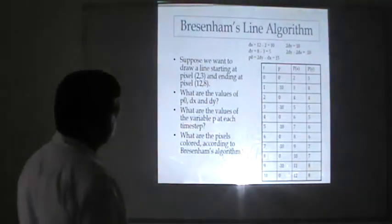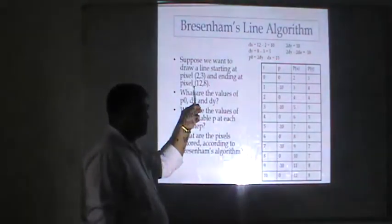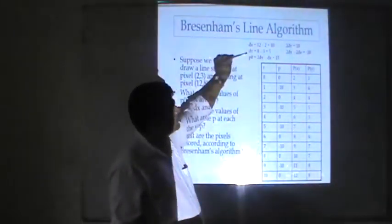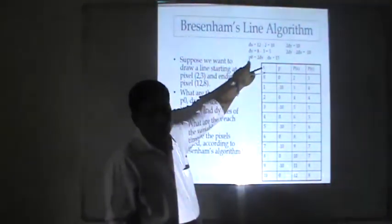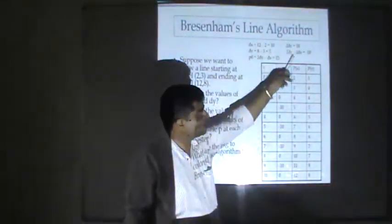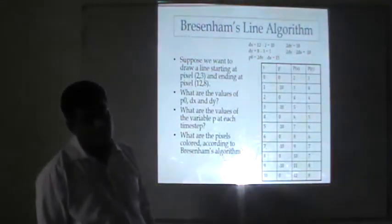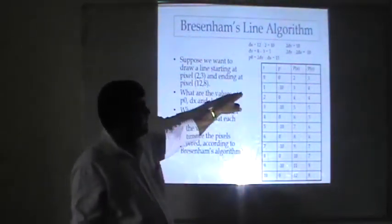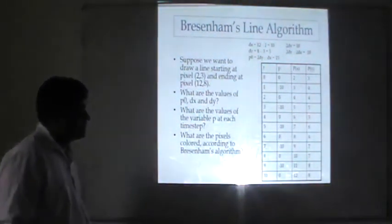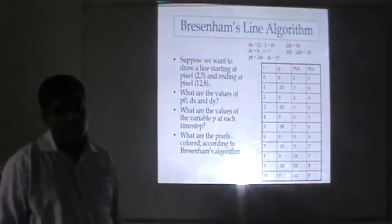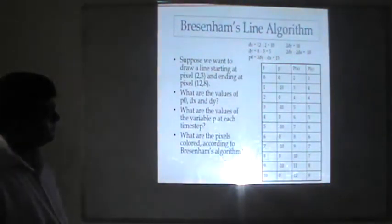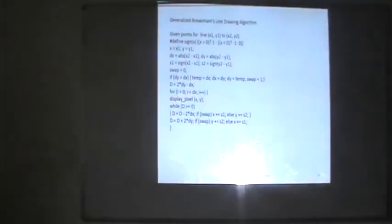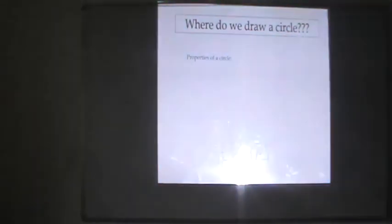A second example using points (2, 3) and (12, 8): find dx, dy, initial decision parameter p0, 2*delta_y and 2*delta_y - 2*delta_x = 10. Plot starting point (2, 3), then calculate decision parameter at each step and find the next set of points as previously discussed. The rest of the slides will continue with this approach.